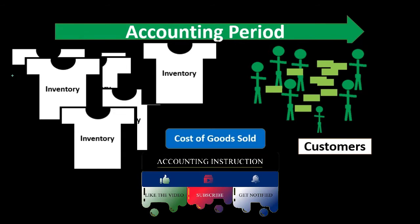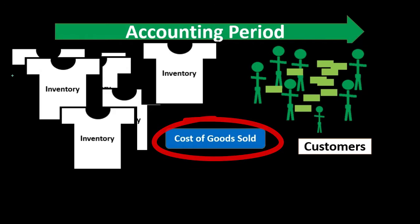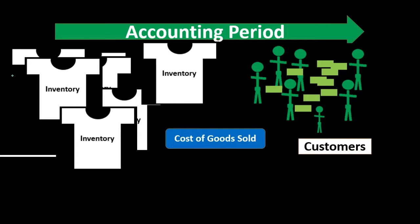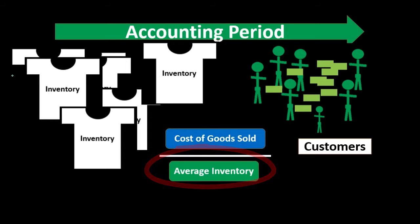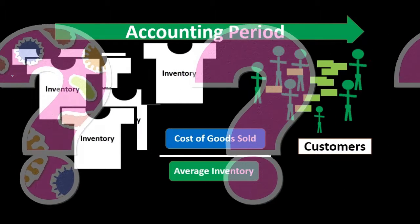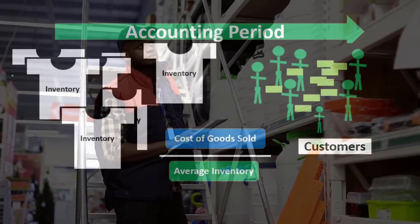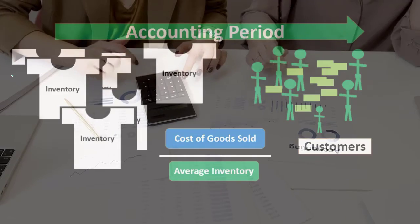The calculation will be cost of goods sold — which is the income statement account, the expense account — divided by the average inventory. It can be confusing to know what the average inventory is, because inventory is reported as of a point in time on the balance sheet.